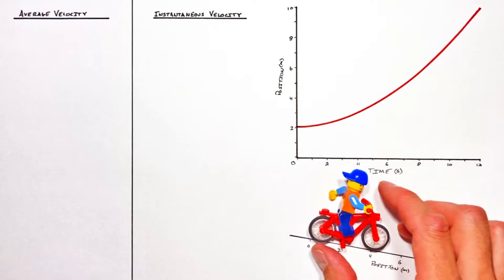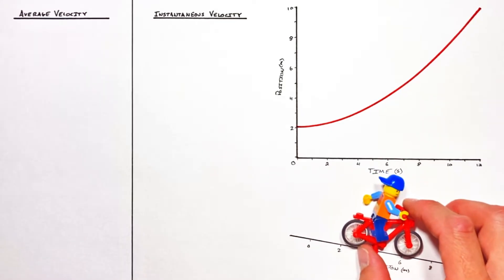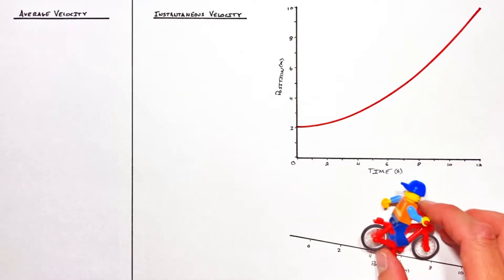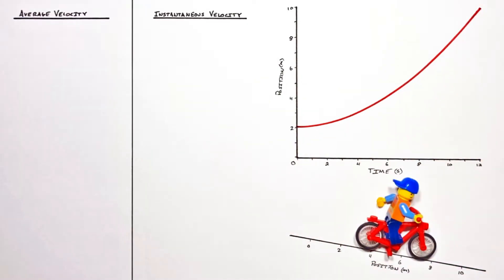We're going to start with this guy right here and he's going to speed up down the hill. And in this problem we're going to solve for the average velocity of the dude on the bicycle as he goes down the hill. And then I also want to solve for the instantaneous velocity at some point in time, how about at a time of 8 seconds.